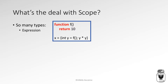First, let's start with expression scope. There's a function called f that returns the value 10. The following line says: x equals int y equals f(); y times y. Within that expression, we define y as an integer storing the result of f, so y equals 10. Then it executes y times y, so x equals 100. At the end of that expression, integer y disappears — it's no longer stored in memory. That variable y is only valid within that expression. That is called expression scope.